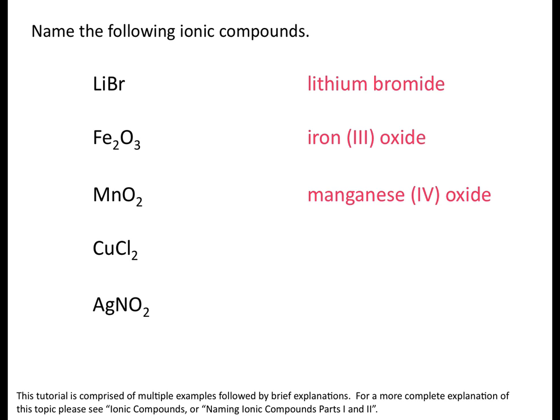Fourth example: copper is another transition metal, so we need to determine the charge on the copper ion. Many transition metals can exist as ions with different charges, so we need to indicate specifically which ion we're talking about. Chlorine forms ions with a charge of minus one, and there are two chlorine ions in this compound, so copper must have a charge of plus two. The name of this compound would be copper(II) chloride.